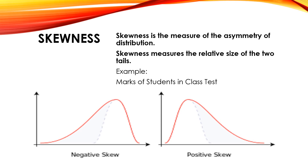For example, marks of students in a class test — suppose there is a test of 100 marks and the difficulty level is very low. In that case, mostly students will get high marks and few will get less marks. The data will shift towards the right side. There will be a bend in the tail on the left or negative side, so this becomes a negatively skewed distribution. Vice versa applies as well.